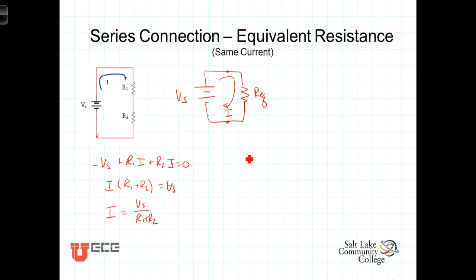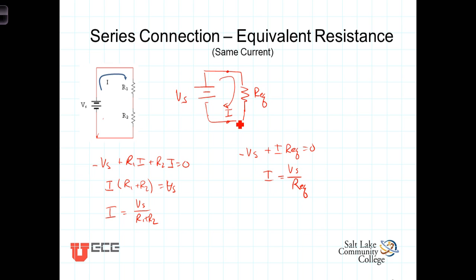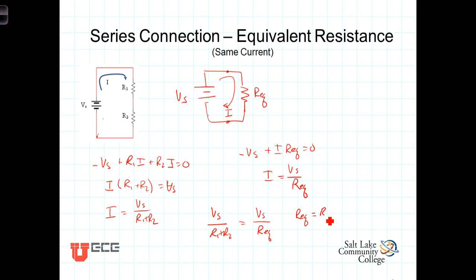Now doing similarly for the equivalent circuit, we have that same voltage source: negative Vs plus I times Req brings us back to where we started, so the sum of those two terms equals zero. Solving for I, we have I equals Vs over Req. Equating the two expressions for I, we get Vs over (R1 plus R2) equals Vs over Req. From this it's obvious that the equivalent resistance of those two series-connected resistors is simply equal to the sum of those two resistances.